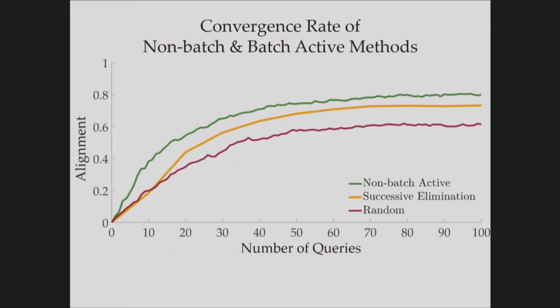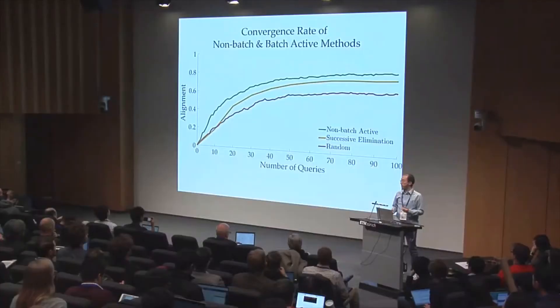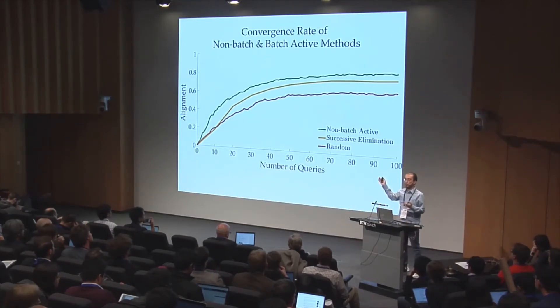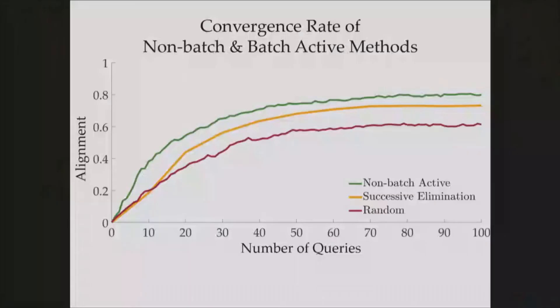We applied our methods on a simple linear dynamical system. And we used alignment metric, which basically quantifies the alignment between the true reward function and the learned reward function weights. And we have seen, as you can see from the graph, non-batch active method is an upper bound for our algorithm. This is expected because it optimizes for each and every step. And the other baseline is random querying. As you can see, successive elimination performs better than random querying. And in fact, it also performs better than other batch mode active methods.